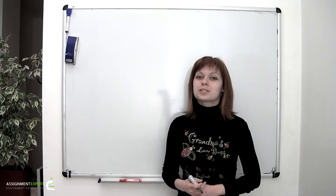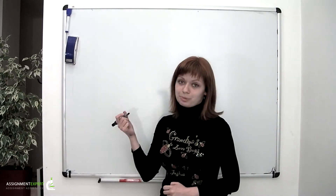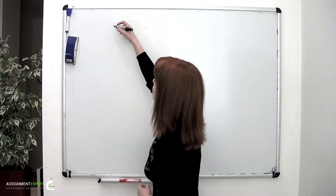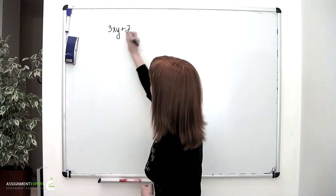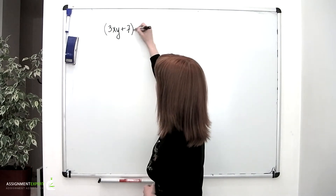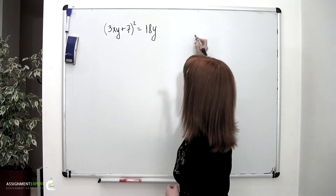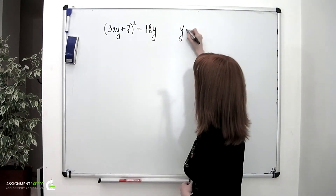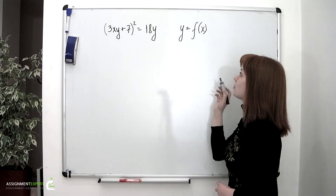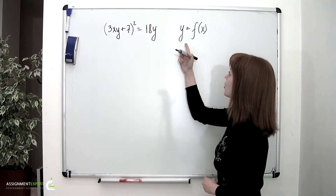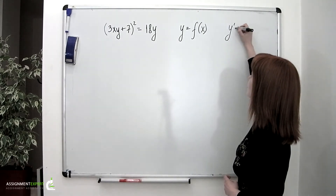This time we're dealing with an implicit differentiation problem. We have a function which is given implicitly through the following equality: 3xy plus 7, squared, equals 18y. Here y is a function of x, and we don't know exactly what kind of function, but what we know for sure is that y depends on x. We are asked to find the derivative of this function, y prime.